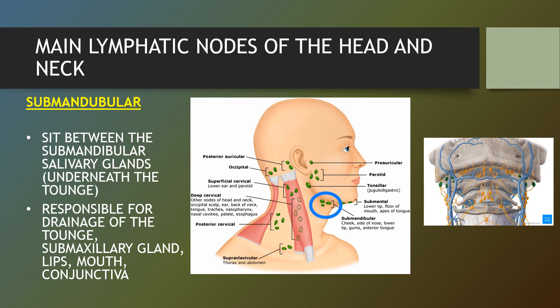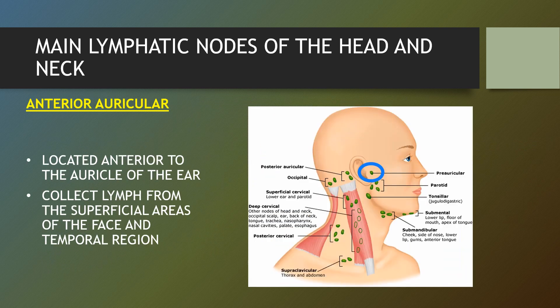Submandibular lymph nodes sit between the submandibular salivary glands, which are underneath the tongue, and the mandible or lower jaw bone. Occasionally one or more of the lymph nodes may be embedded deeper in the salivary glands. They are responsible for drainage of the tongue, submaxillary glands, the lips, the mouth and the conjunctiva.